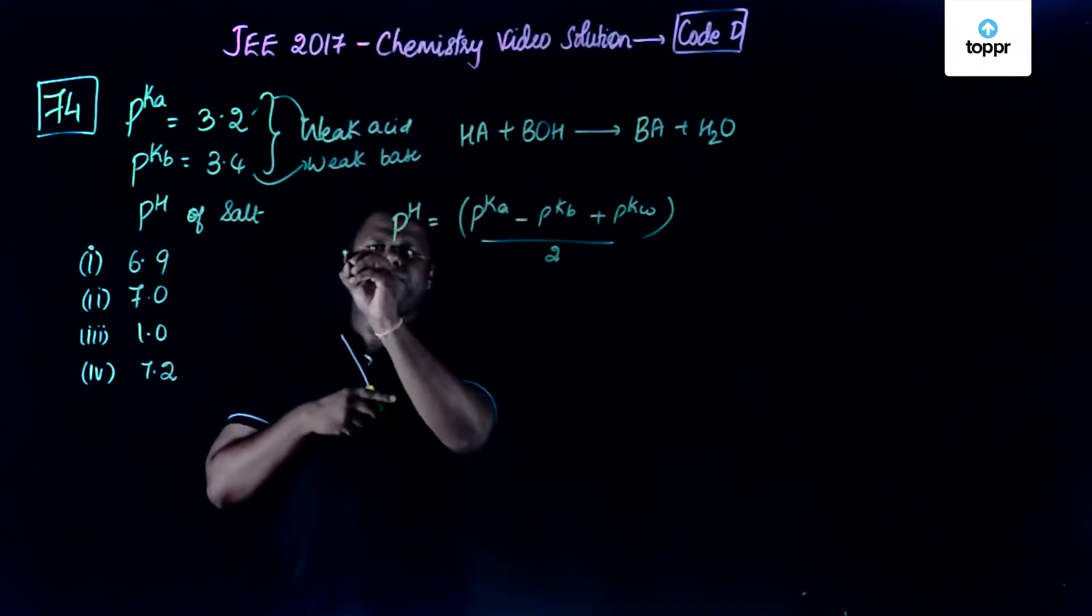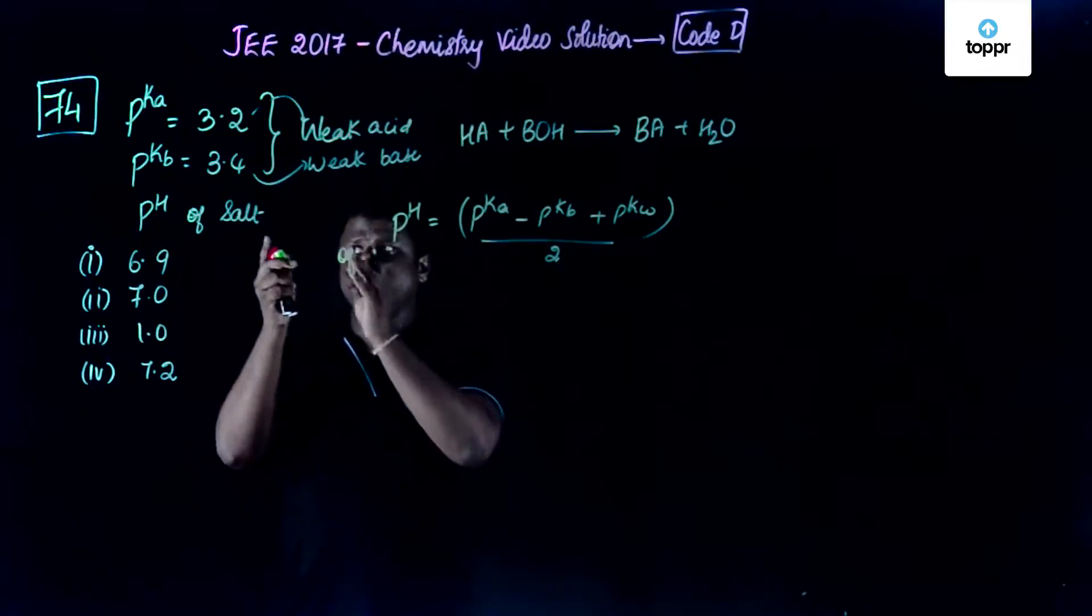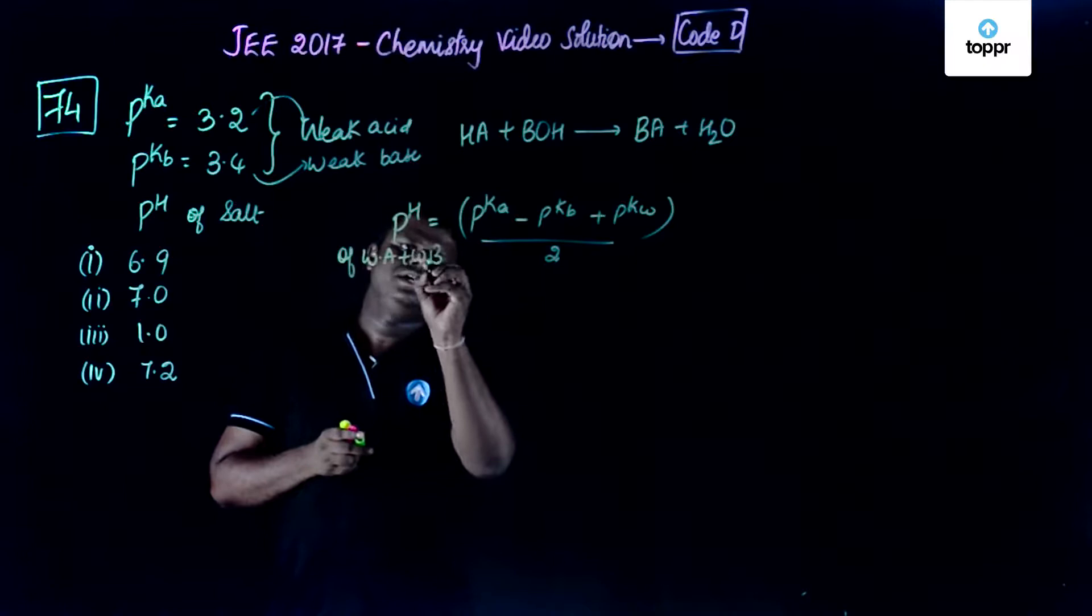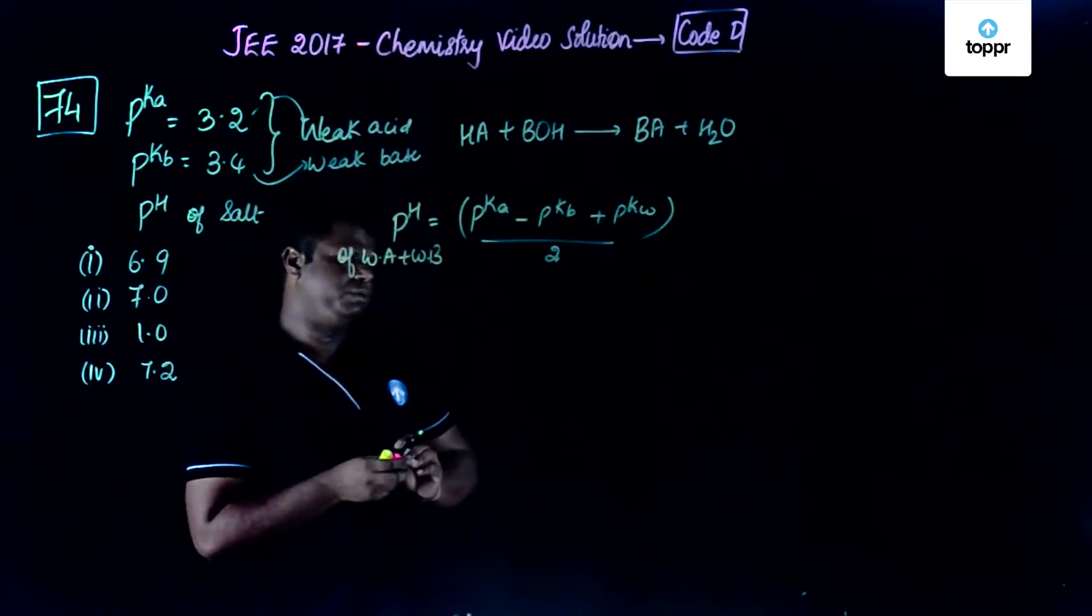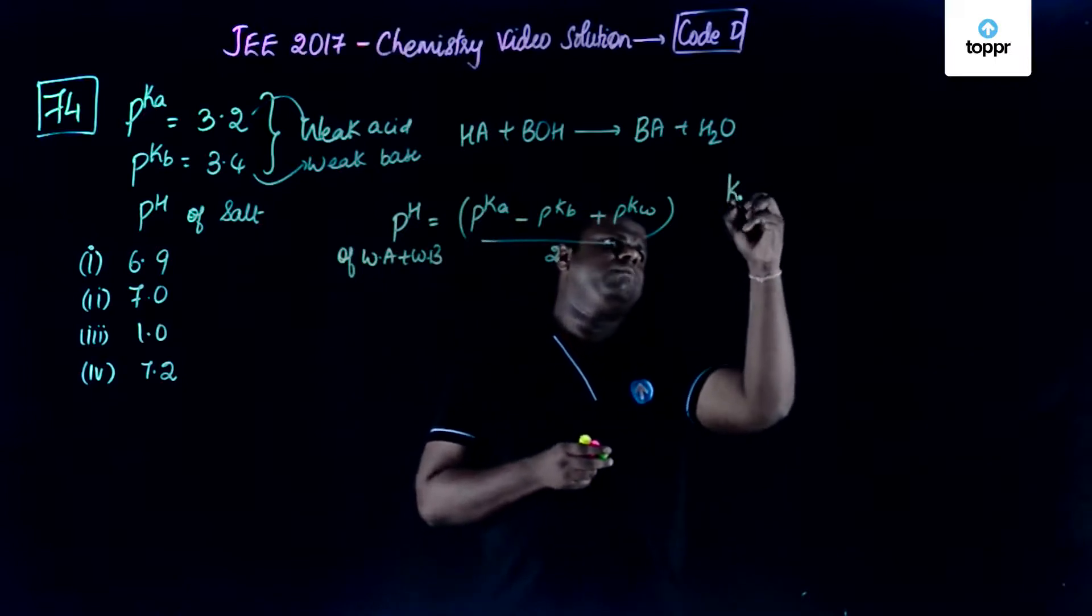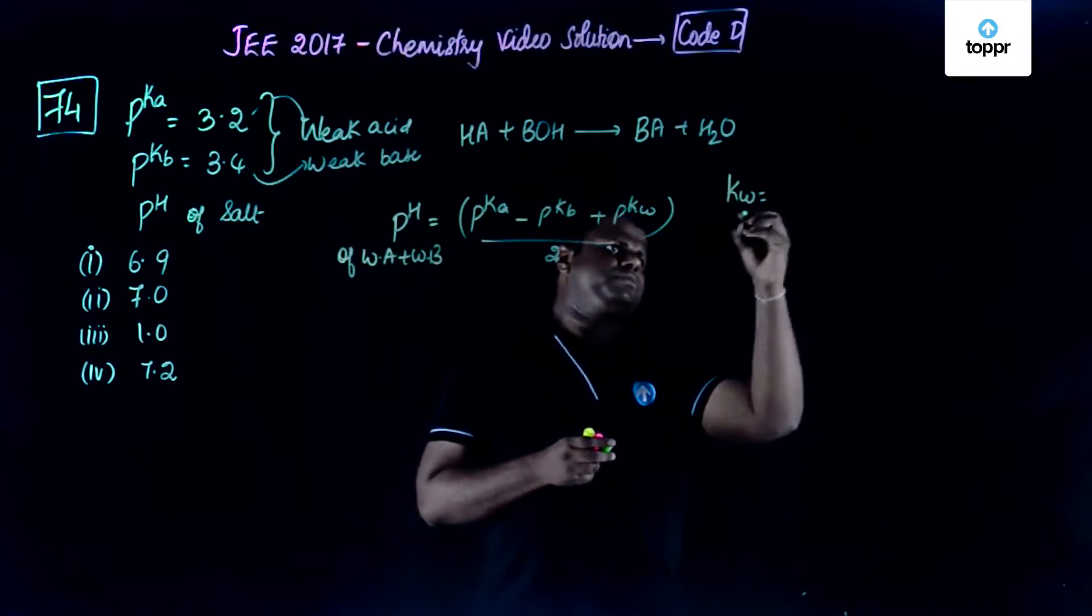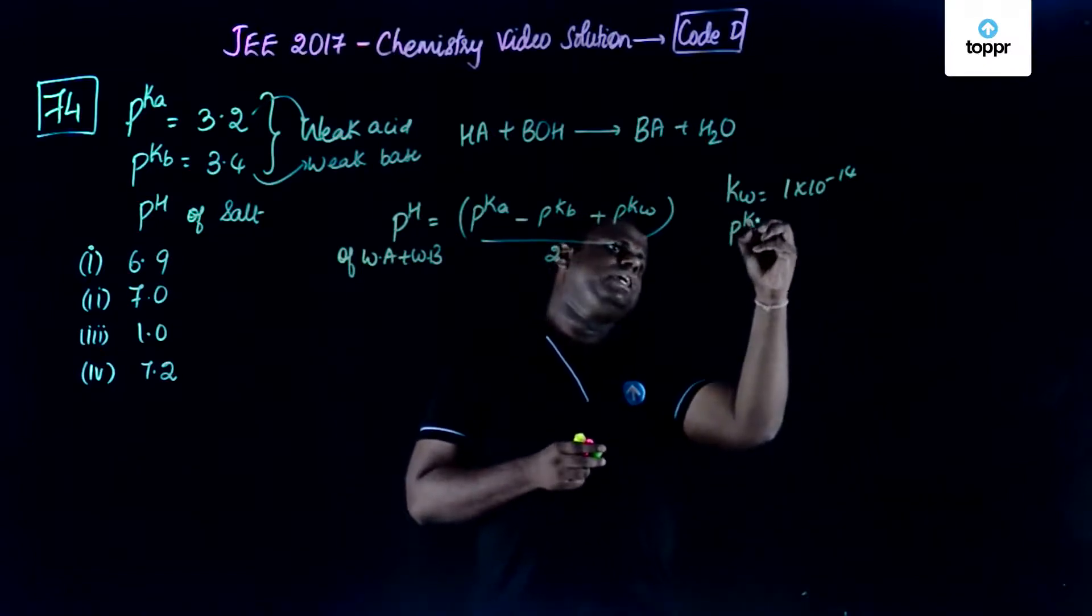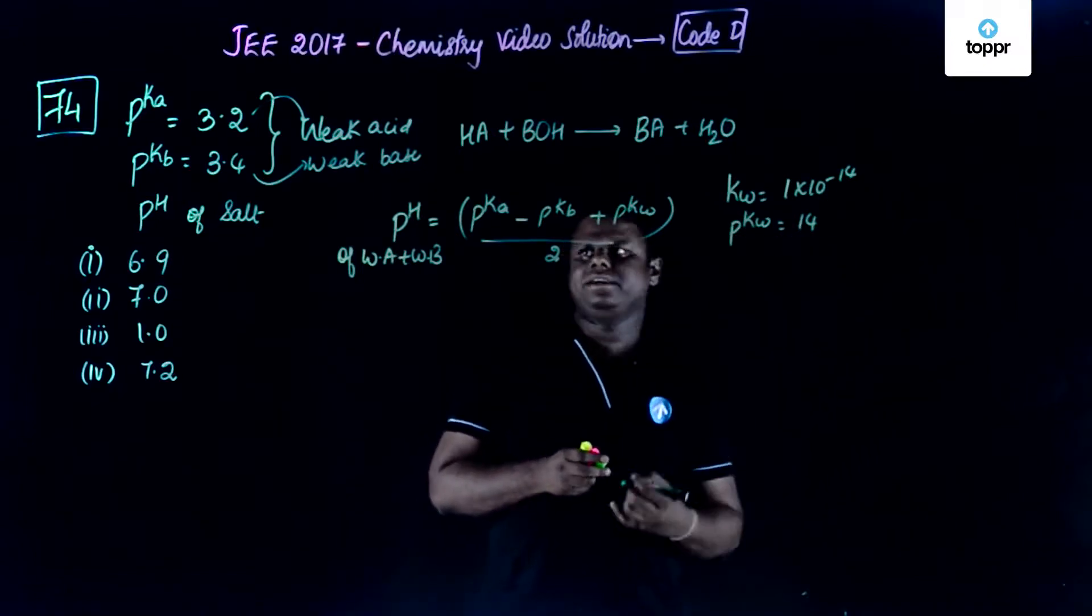So pH of salt which is pH of the solution wherein you have weak acid and weak base is given by pKa minus pKb plus pKw divided by 2 where you know that Kw is equal to 1 into 10 to the negative 14 which is ionic product of water. So that means pKw will be equal to 14.